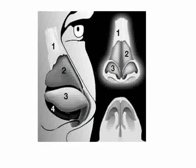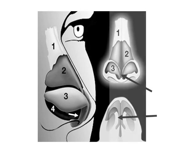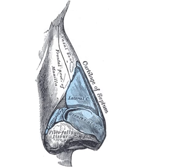Inferiorly, the septal cartilage does not reach as low as the nasal septum. Here it is composed of the medial crus of the lower lateral cartilage and fibro-fatty tissue. This part of the septal cartilage is mobile and therefore called septum mobile nasae.